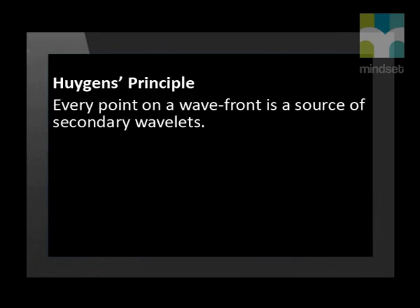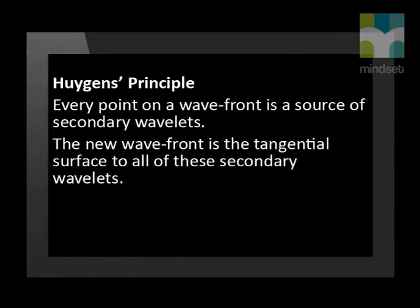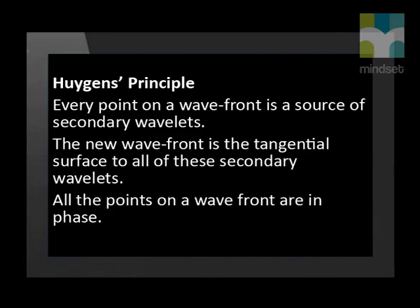Huygens said you can think of every point on a wave as a source of more little waves. Each point in the wave makes wavelets and we know that the waves from a single point on water are circular. The secondary wavelets spread out in the forward direction and the fronts of all these new waves together form a line that is the new wavefront. All the points on a wavefront are at a crest at the same time or in a trough at the same time. We say that they are in phase.